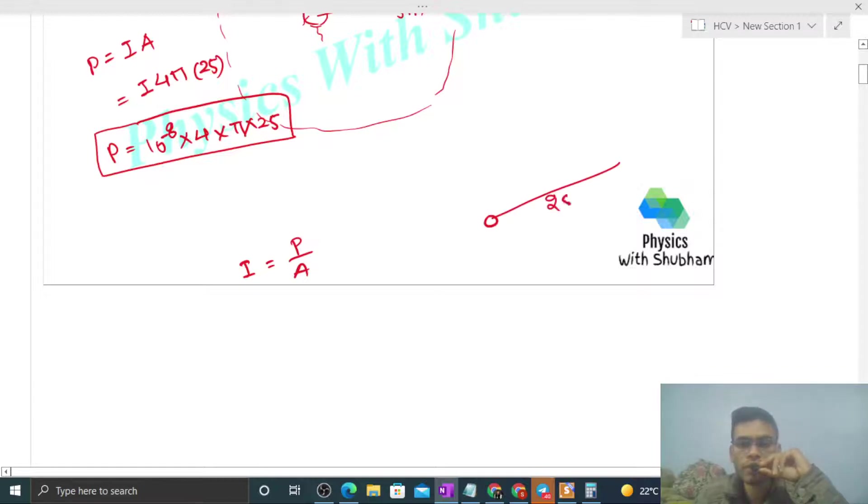Like here, the point source is here and at 25 meters distance, again we can draw one sphere. And the power will be uniformly distributed over the surface area of this sphere. So power divided by area. Power is how much? We have already calculated. That is 10 raised to the power minus 8 into 4 into pi into 25 divided by area.